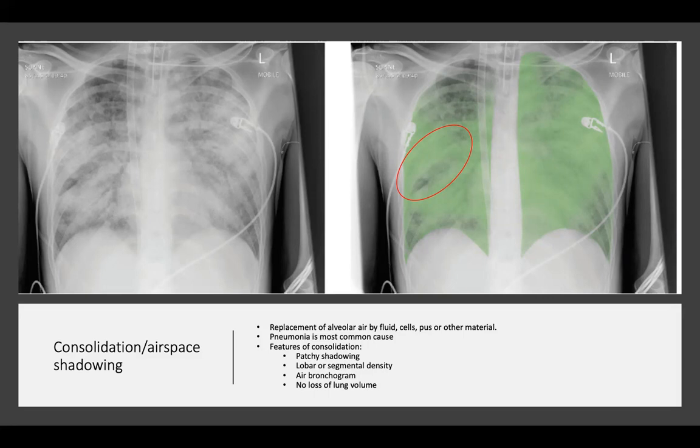There is no loss of lung volume in consolidation. Lung volumes may actually increase in the early stages, and in later stages there can be small loss due to secretions obstructing the airways, but as a general rule there is no significant loss. In the x-rays shown, there is consolidation in both lungs with moderate sparing of the apical segment of the right upper lobe, with patchy airspace shadowing marked in green and an air bronchogram visible inside the red circle.